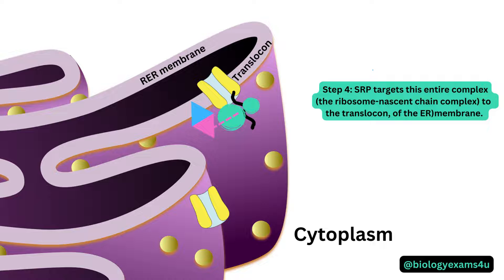This targeting occurs via the interaction and docking of SRP with its receptor. There is an SRP receptor located on the ER membrane, and the SRP binds to this receptor.